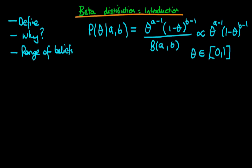This distribution is only defined for theta lying in the range 0 to 1. So why might we choose to use the beta distribution to specify prior knowledge about a parameter theta? One reason is that this distribution is only defined for theta in the range 0 to 1, making it a very natural distribution to use when talking about probabilities and specifying prior knowledge about the probability of something occurring. We'll also see that we can specify quite a large range of beliefs by changing the parameters a and b.